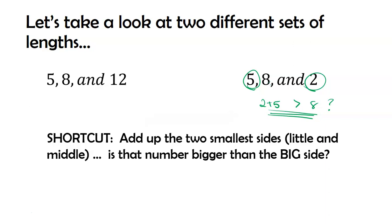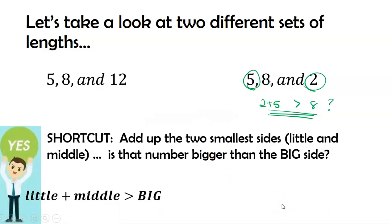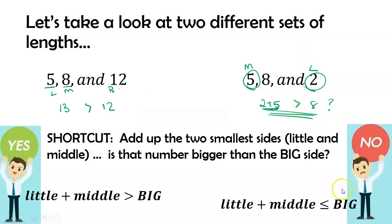You ready? I renamed this theorem. I call this little and middle is bigger than big. Say that five times fast. Little and middle is bigger than big. Over here, is little and middle bigger than big? Heck yeah. Here's little and middle. Little and middle is 13. Is that bigger than big? Heck yeah. 13 is bigger than 12. Over here, little and middle. Here's little. Here's middle. That's 7. Bigger than big? Oh my gosh. I said heck yeah. No. 7 is not greater than 8. Look how disgruntled this guy is. He's very upset. Look at his eyebrows. I think I need new clipart.